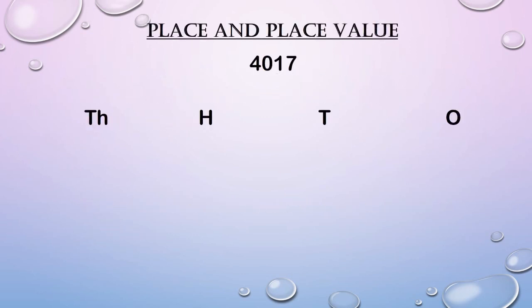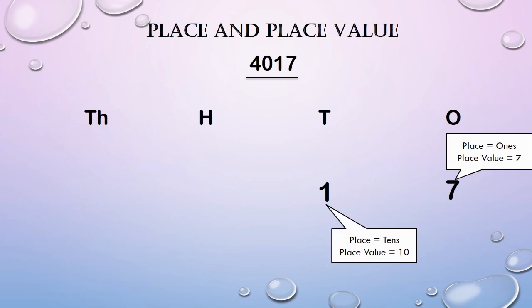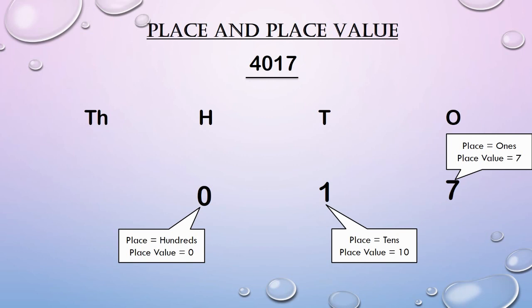Now let us see the place and place value of each digit in the number 4017. 7 is in the 1's place and its place value is 7. 1 is in the 10's place and its place value is 10. 0 is in the 100's place and its place value is 0. No matter what is the place of 0, the place value of 0 is always 0.